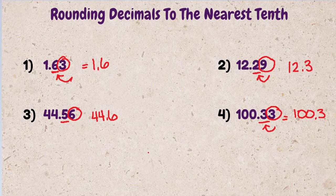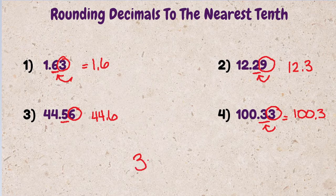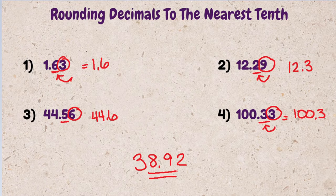Now that we've gone through four examples, try one on your own. Round 38.92 to the nearest tenth. Drop your answer in the comments below.